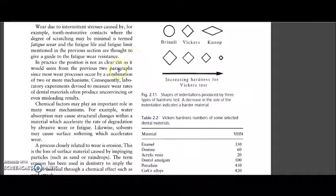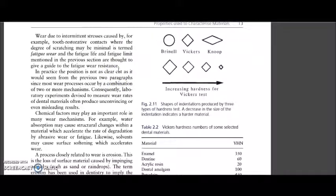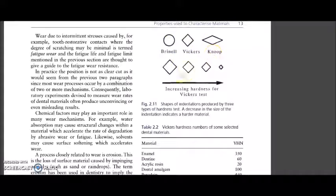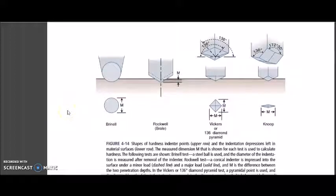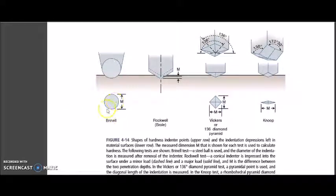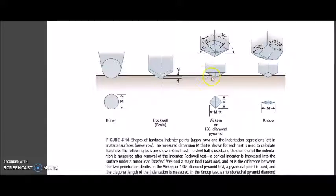To revise the different types of hardness tests: there is Brinell, Vickers, Knoop, and Rockwell. The Brinell indenter is shaped as a ball. The Vickers or diamond pyramid indenter is at 136 degrees — this refers to the degree of angulation of the diamond pyramid. The Knoop indenter has its own characteristic elongated rhomboid shape.